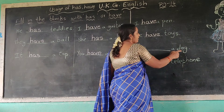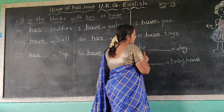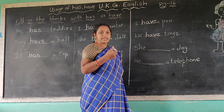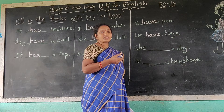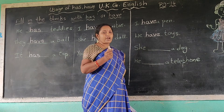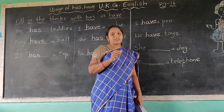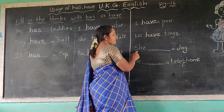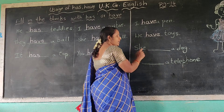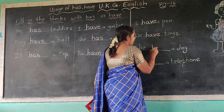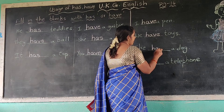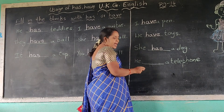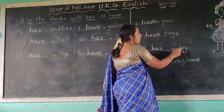Next one: she dash a dog. She is a girl — she uses 'has'. He, she, it — has. She has a dog. Spelling H-A-S. She has a dog.